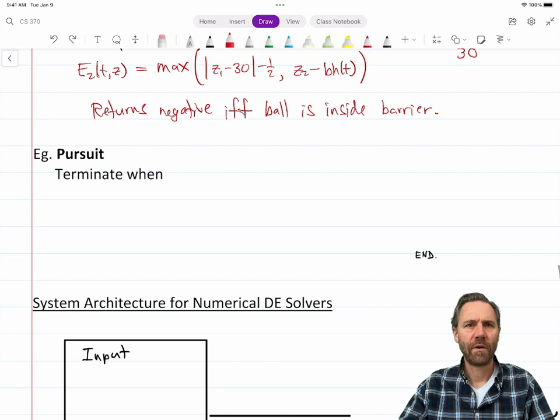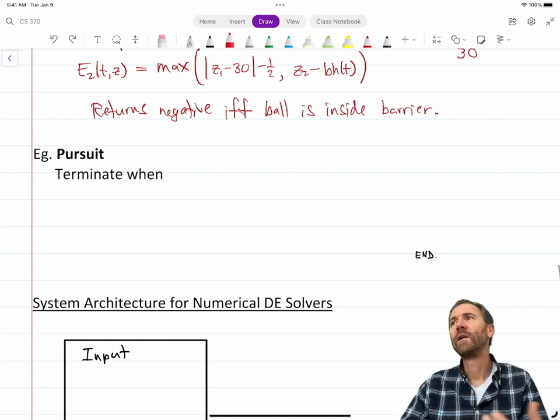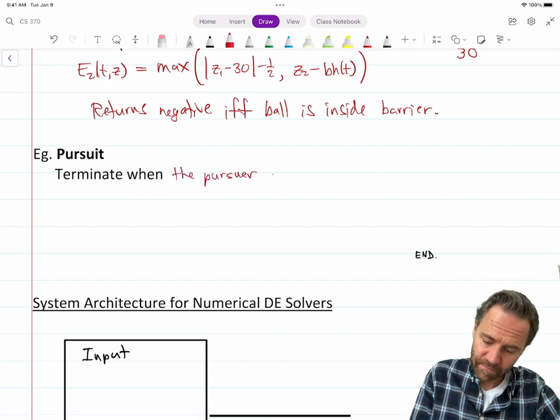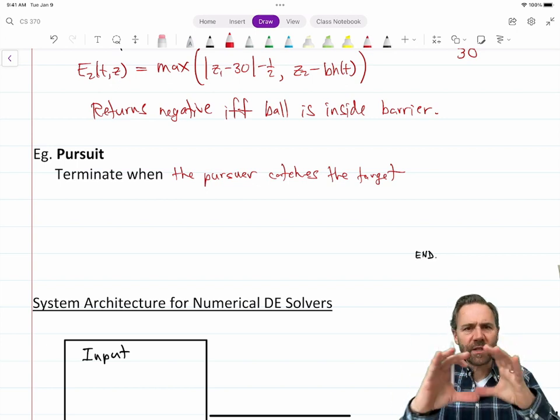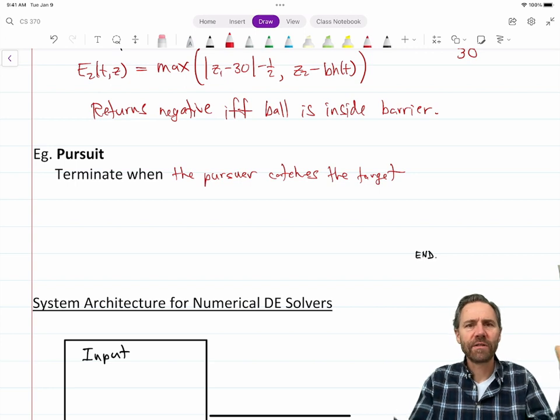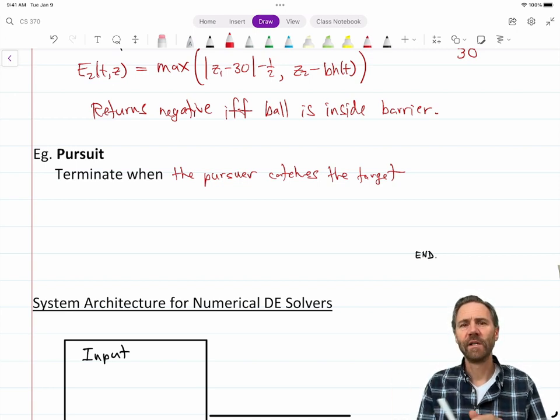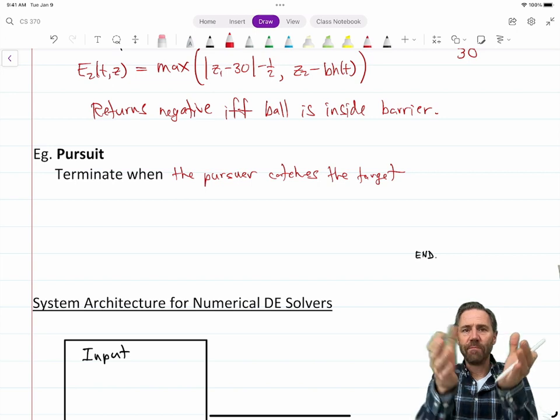The second one is better because it goes continuously from positive to negative. So the numerical integrator has more information to try to figure out where the exact crossing is, and it tries to estimate the location of the exact event. It tries to give you a sample at that point.